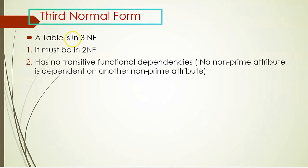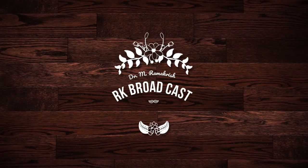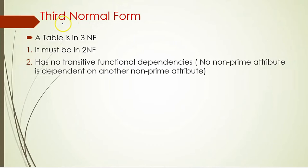Hi friends, welcome to my series of videos on normalization. In this video we are going to learn about the third normal form. Before talking about the third normal form clearly, let us have a recap of the second normal form. Second normal form is a normal form where we discussed partial dependency — a relation should not contain partial dependencies. So now let us come to the third normal form very clearly.